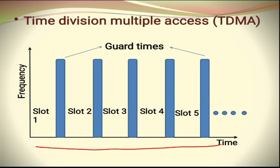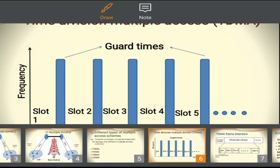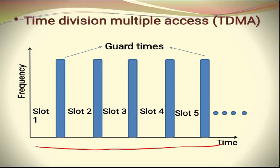During their assigned time slot, the user has complete availability of the satellite. For example, if slot one is provided to user one, during that time slot user one can access the satellite with complete resources — meaning complete availability of its bandwidth. Within the given time slot, the user can access the satellite with tremendous speed as the bandwidth is completely available.